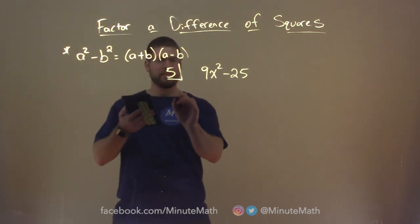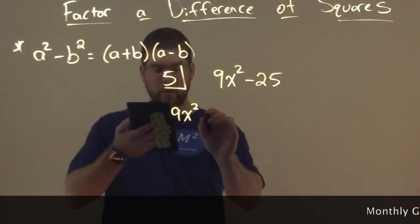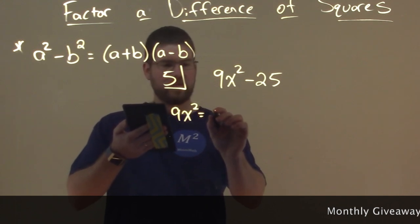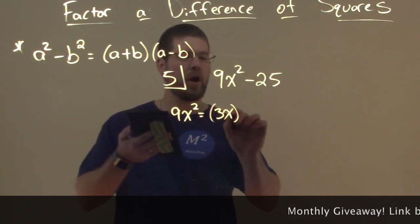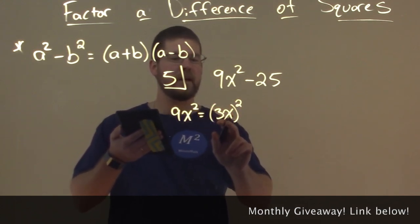9x squared here is a perfect square because 9x squared is 3x all squared. 3 squared is 9, x squared is x squared.